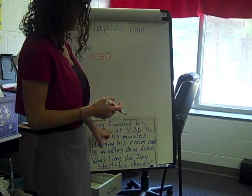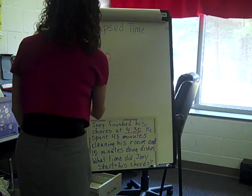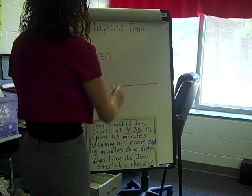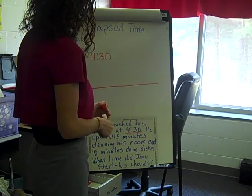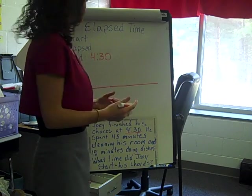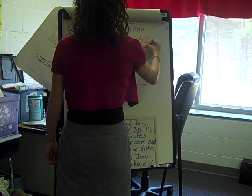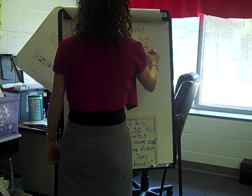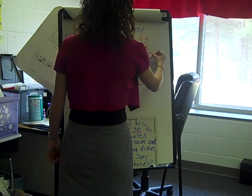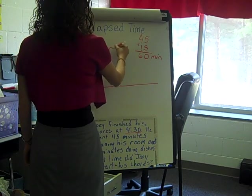One way is to add those two times together to figure out how many hours and minutes, or you could start with your timeline and put on the 45 minutes and 15 separately. I personally like to put the two times together. So if I take 45 minutes plus 15 minutes, that gives me 60 minutes. I know 60 minutes is an hour, so the elapsed time in this case is one hour.